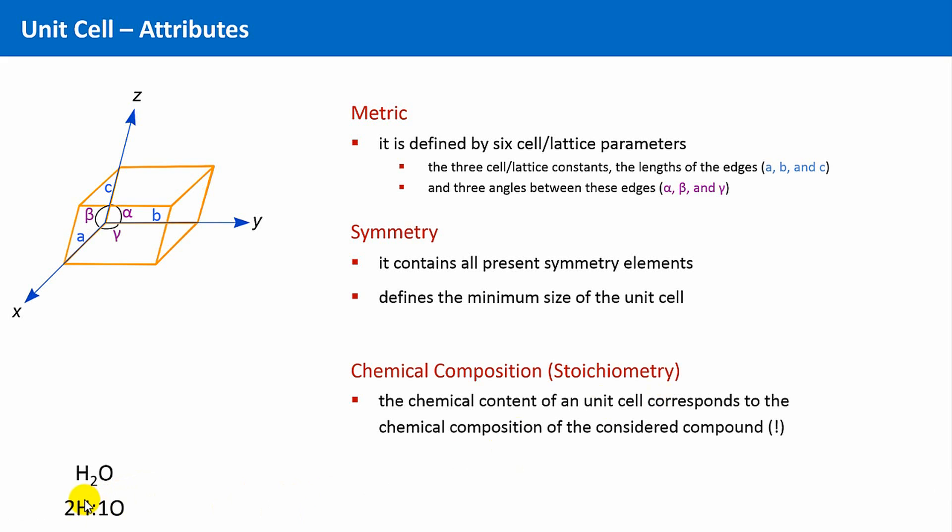If the unit cell consisted of a chemical species HO, then the whole crystal would have necessarily the same composition, because the only thing allowed with this unit cell is to repeat it along all three directions. And that means an additional hydrogen atom would never add up to the HO, only other HO units.